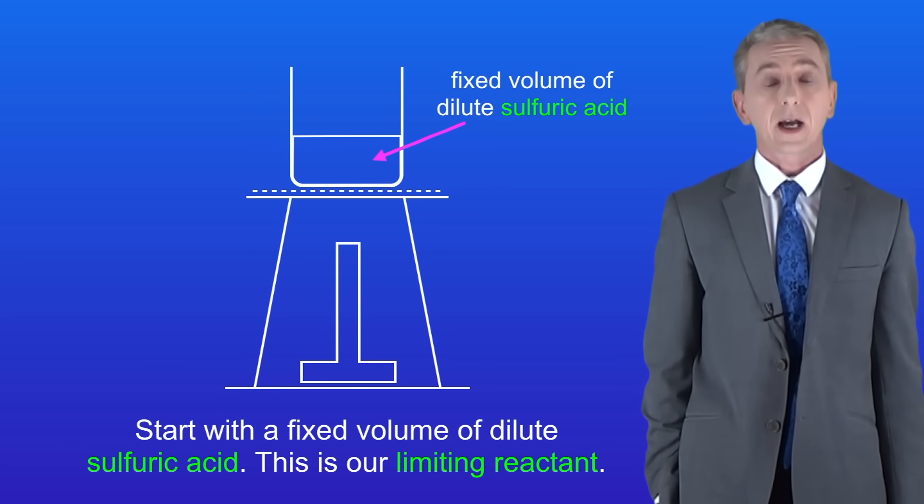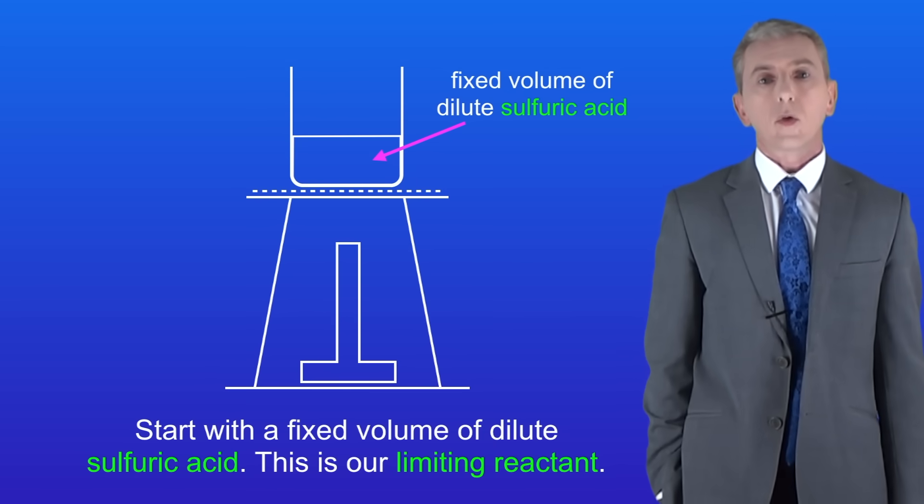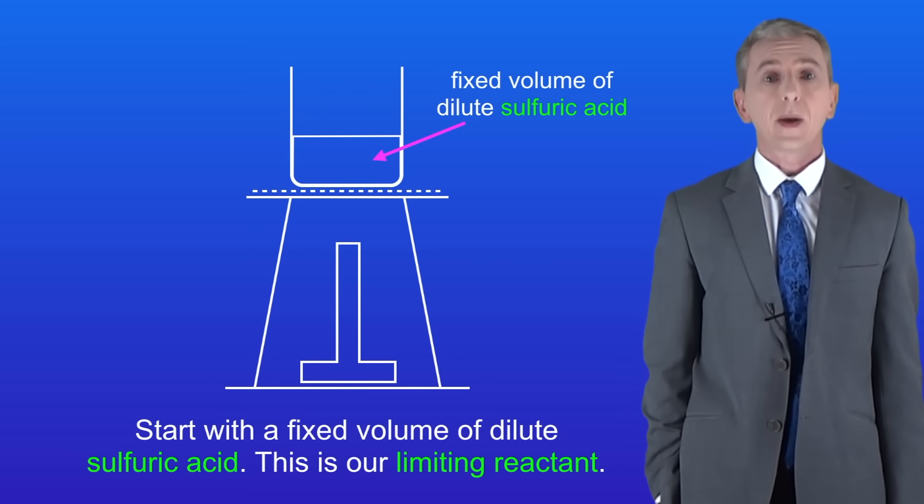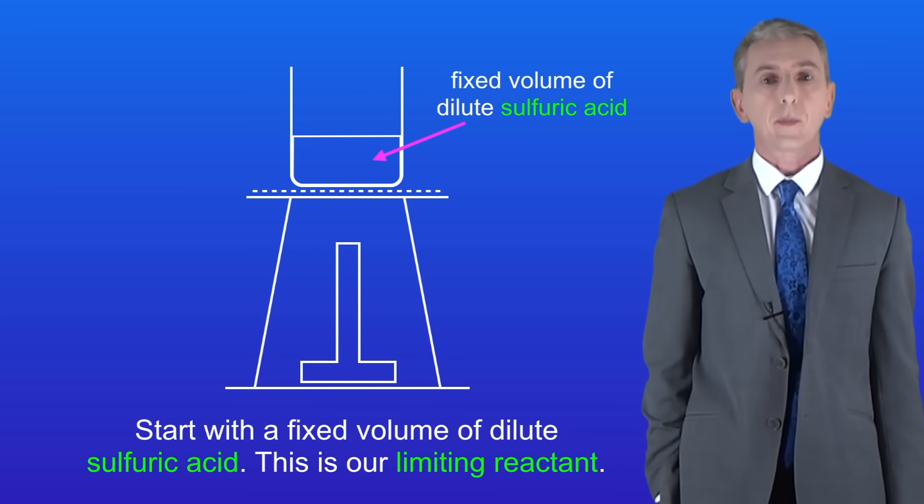First we start with a fixed amount of dilute sulfuric acid. This is our limiting reactant. In other words the acid will run out. Now this is really important. We do not want any acid remaining at the end as that would contaminate our salt. So we need to make certain that all of the acid is reacted away.